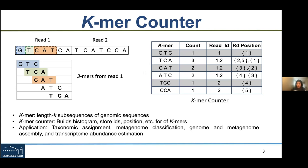The last two columns are the read ID and read position — meta information required by many applications. While developing this module, our primary focus was to integrate it with DBela, which is a de novo genome assembly pipeline on a distributed setup. For that application, we need to store the read ID and read position. Our current framework doesn't support this extra information, but it's a straightforward solution belonging to our future work. The application of this k-mer counter is in many bioinformatic analysis applications, including taxonomic assignment, metagenome classification, and genome and metagenome assembly.